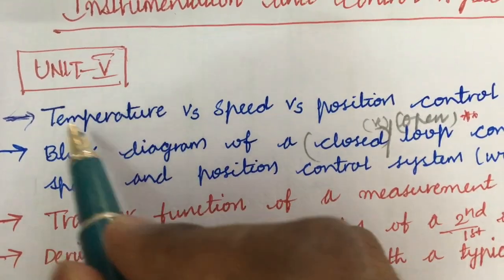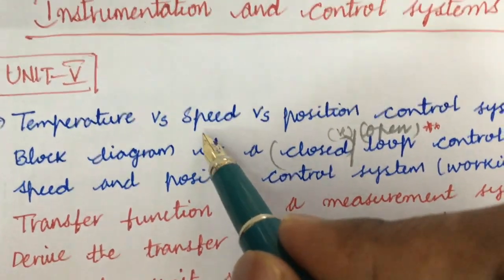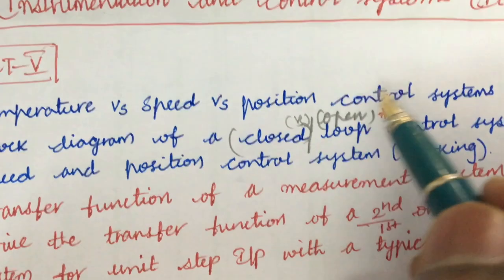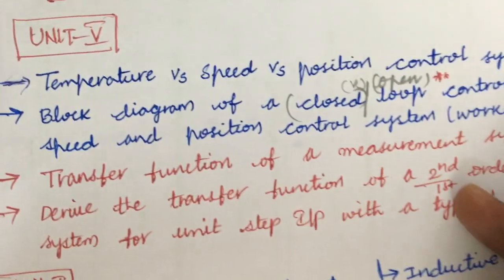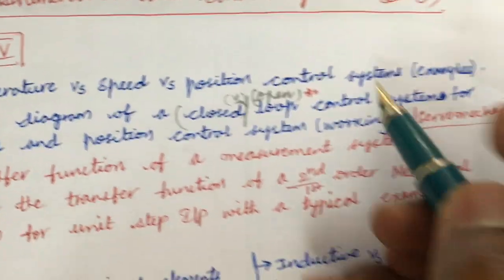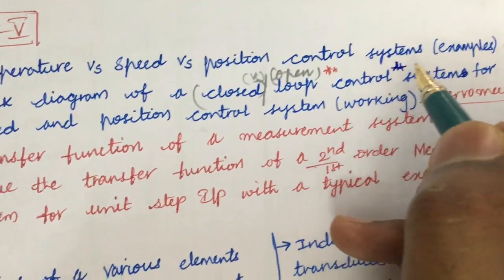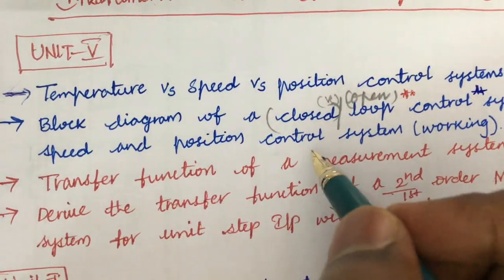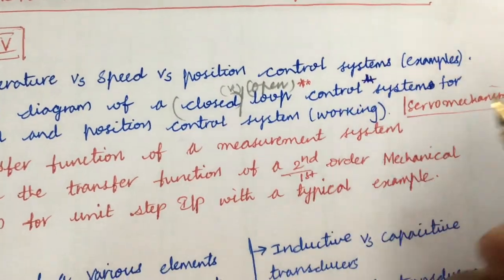The first question I have taken is about the eighth question, it is all about temperature versus speed versus position control systems along with examples and the block diagram of a closed versus open loop control system, said to be one of the sure shot question for speed and position control system, its working and about servomechanisms I may ask.